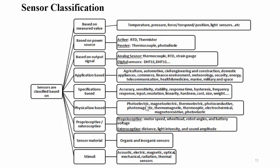Physical law-based classification depends on different physical principles — for example, photoelectric principle-based sensors, magneto-electric based sensors, thermoelectric, photo-conductive, photo-magnetic, magnetic, thermo-magnetic, thermo-optic, thermo-chemical, and magneto-resistive photo-elastic working principles.